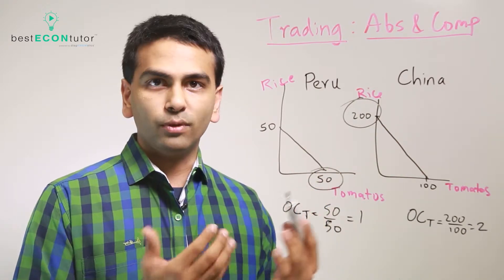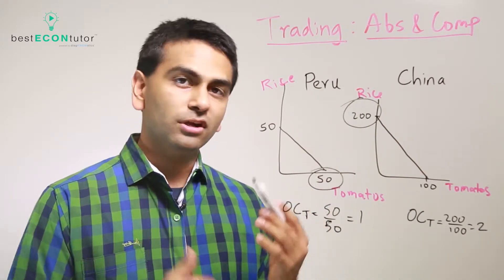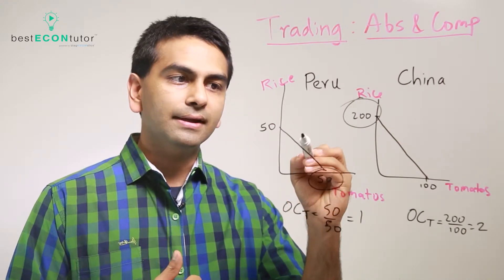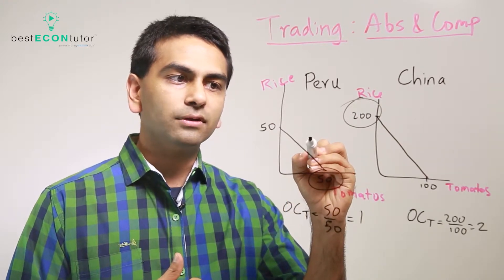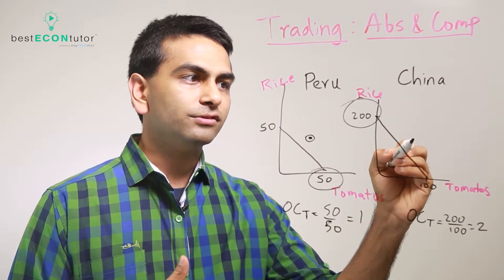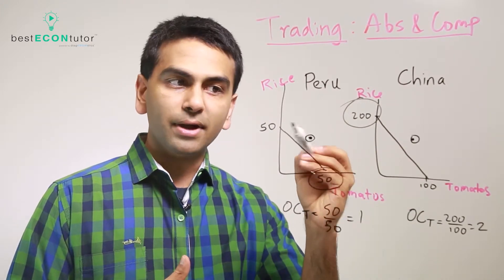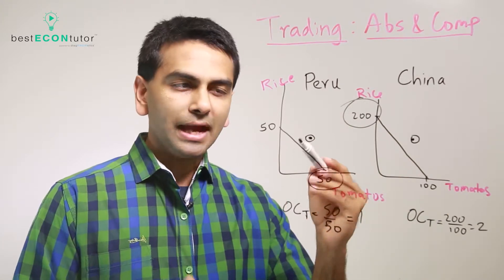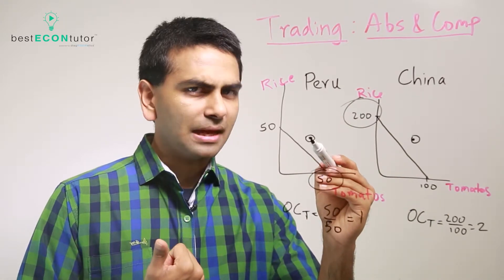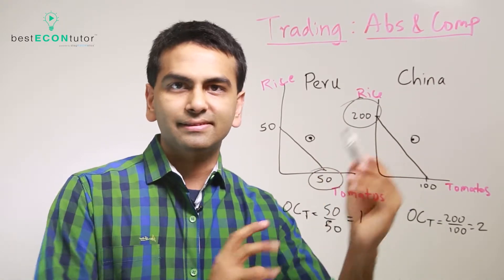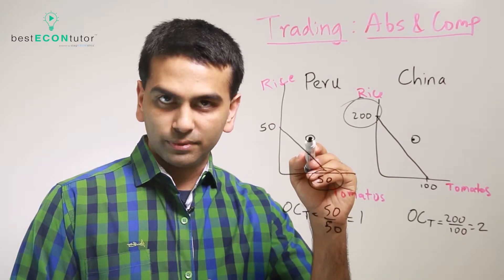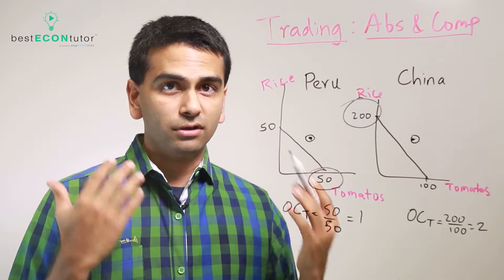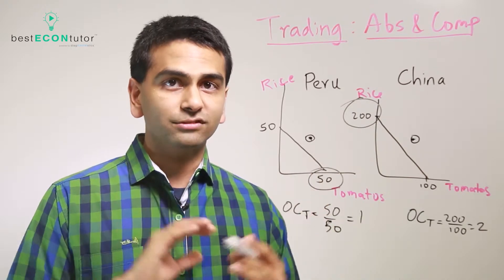If you trade based on comparative advantage, after trading you can consume a point outside of your original PPF — a previously impossible point for both countries is now attainable. You can't produce that point directly, but after specializing and trading, both countries can consume outside their PPF. That's why there are always gains from trade.